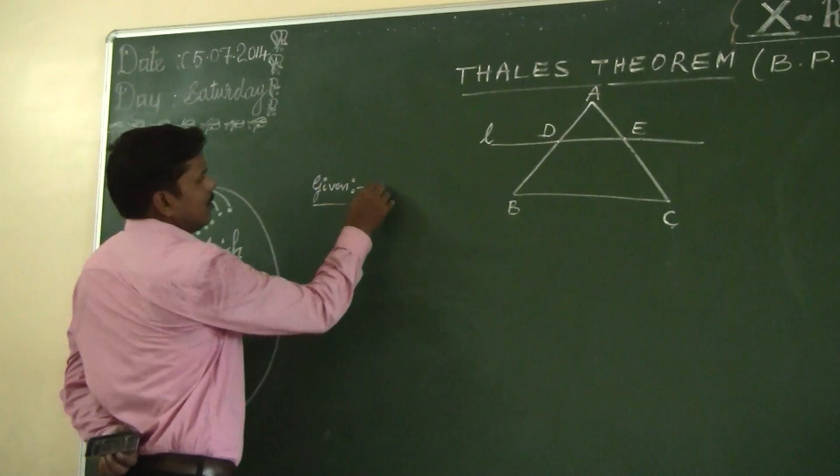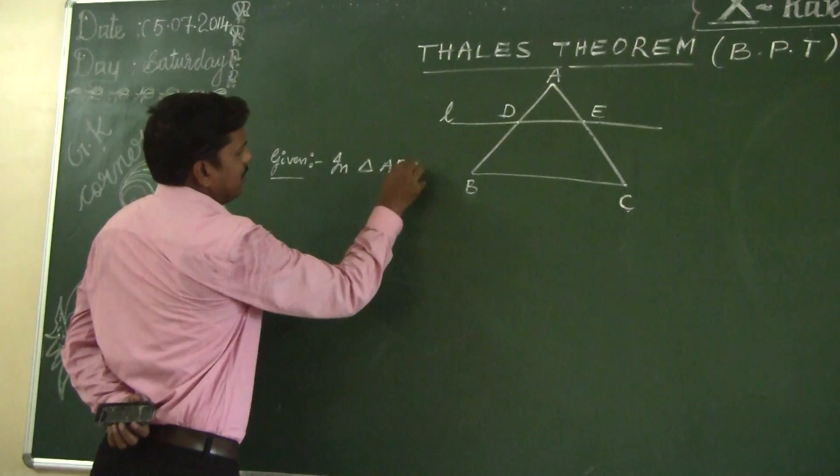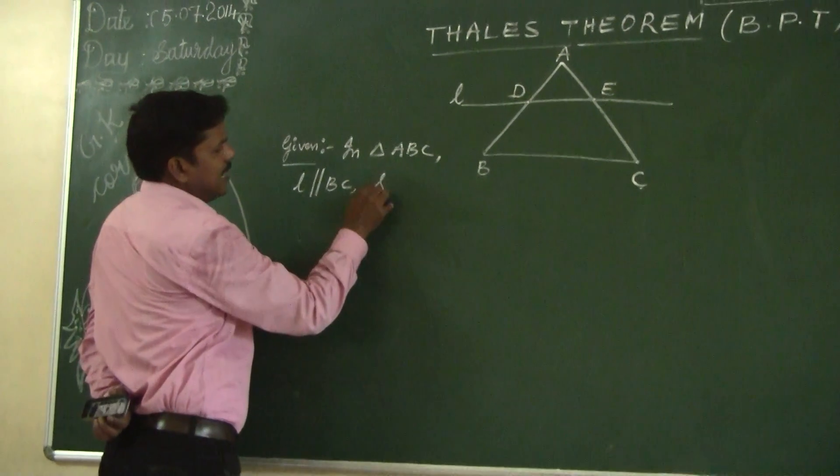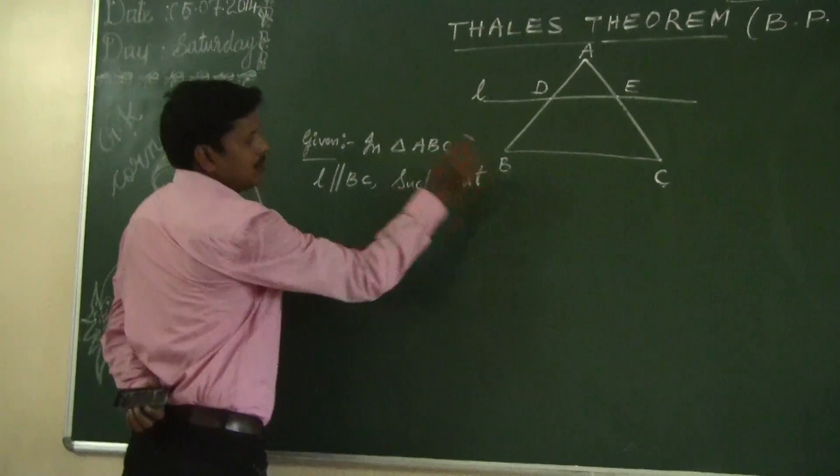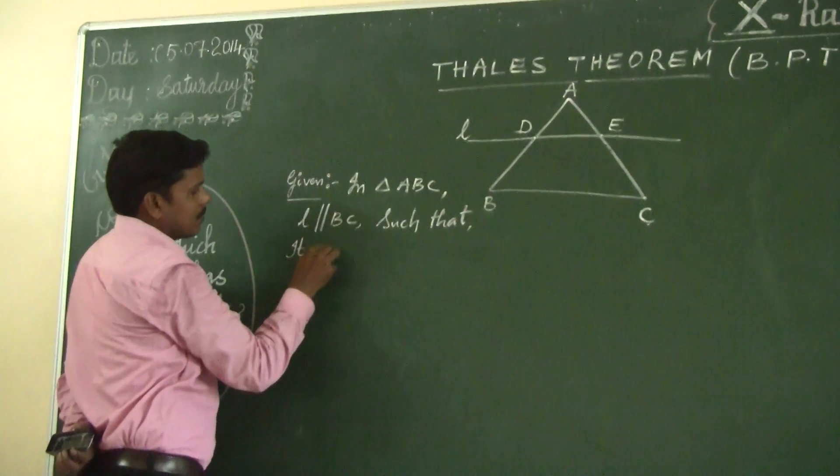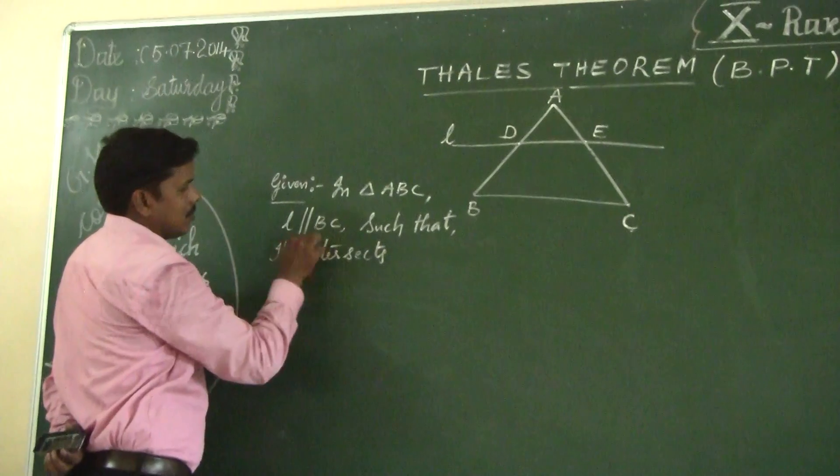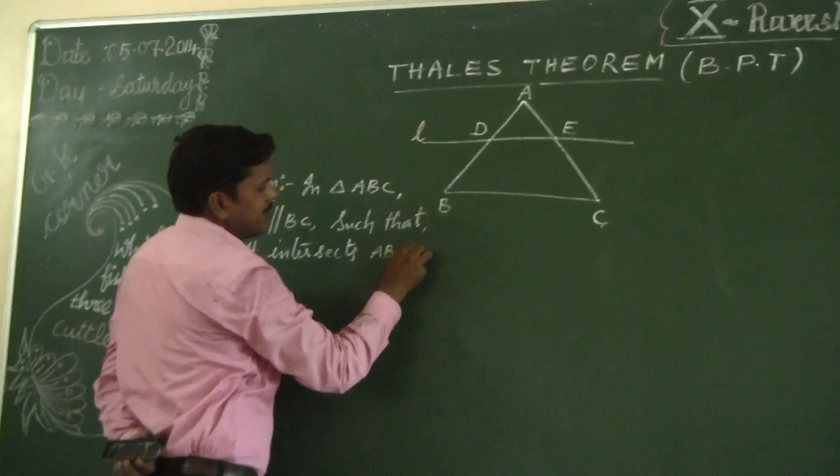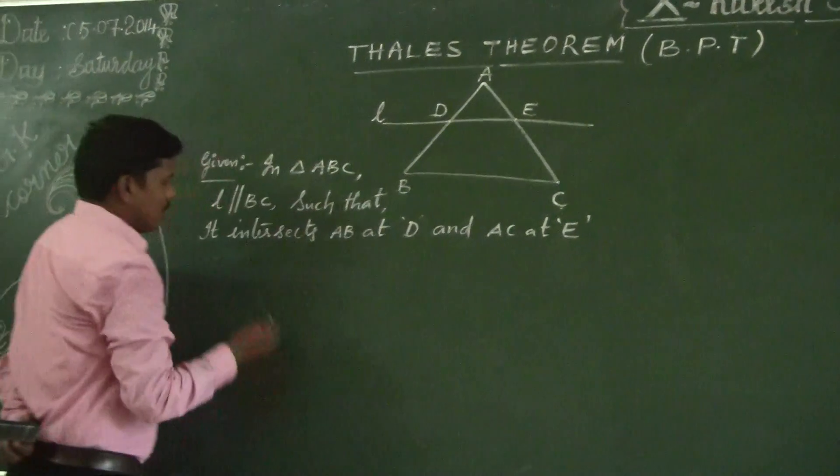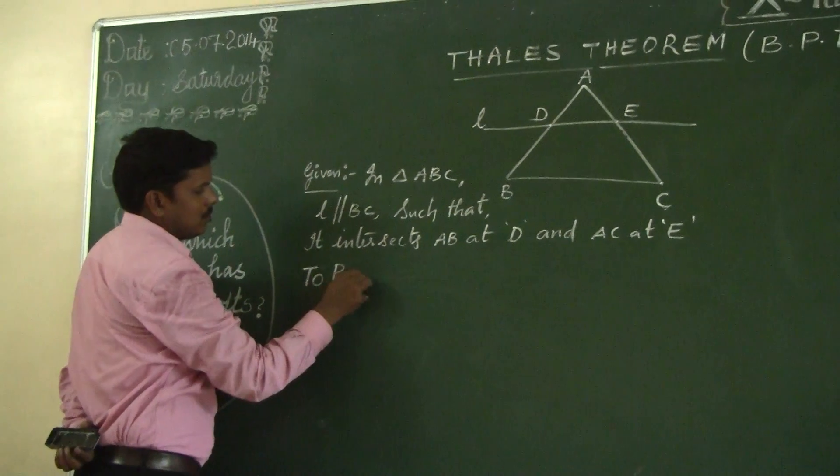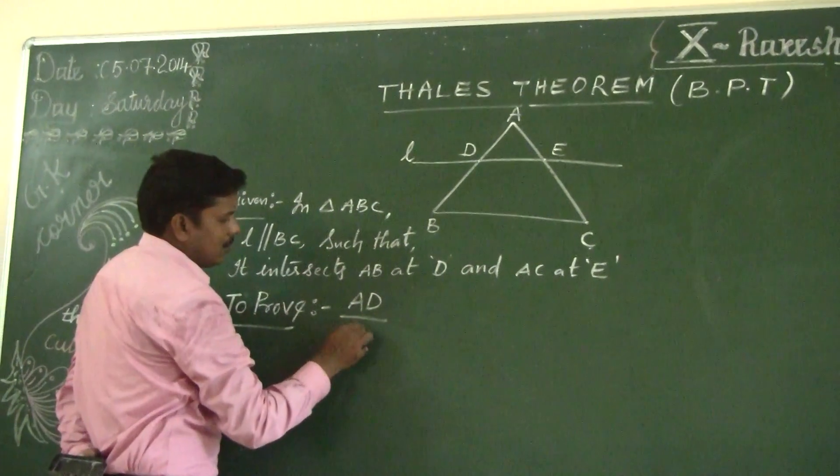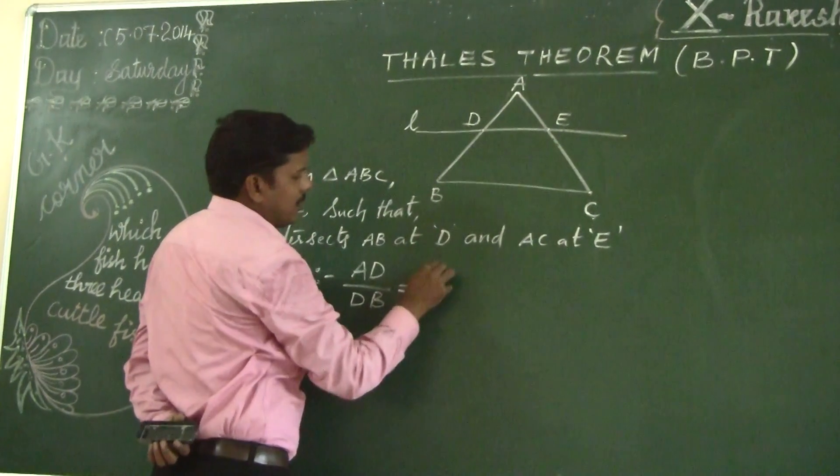What is given? Given: In triangle ABC, L is parallel to the side BC such that it intersects AB at point D and AC at point E. What do you want to prove? We want to prove AD by DB equal to AE by EC.